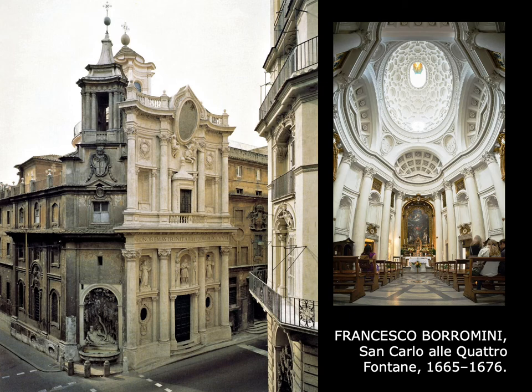Poor Borromini really never gets out of the shadow of Bernini. He was devastated that the public did not think his building was a masterpiece. At the age of 68, he committed suicide — we think because he never got out of Bernini's shadow in Rome.